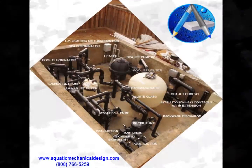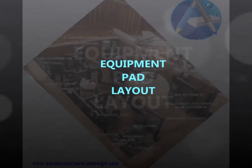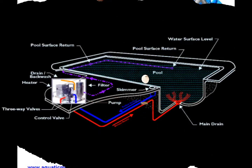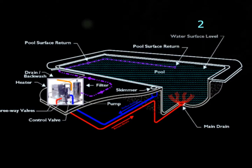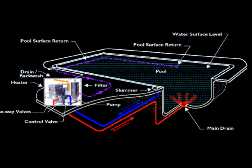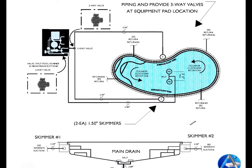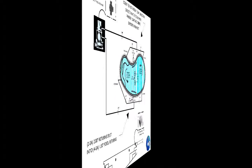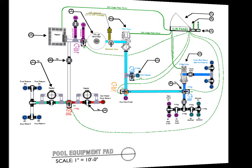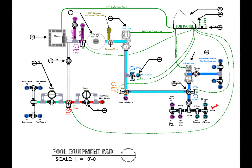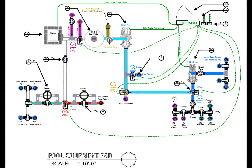Our Sheet P6 Equipment Pad Layout information corresponds with the numeric designations of our P2 Plumbing and Lighting Plan. The purpose of this is to provide directions for where the pool's piping and conduit infrastructures are to connect to the pool equipment at the pad. The equipment pad's piping and conduit connections will correspond with the interconnecting numeric designations coming from the pool.